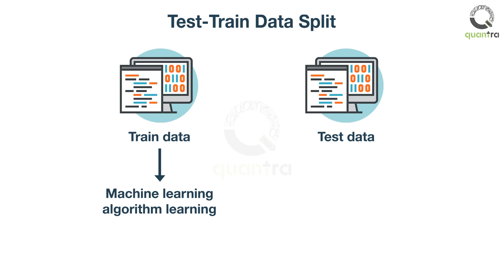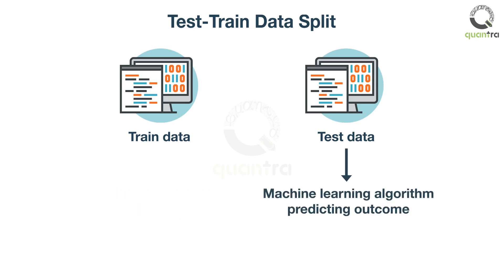Once the learning on the train dataset is over, Rob verifies the performance of the machine learning model on the test dataset. If the performance on the test dataset is good, then the model has indeed learned something useful.